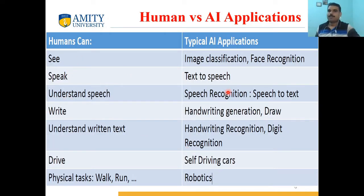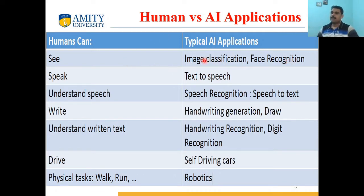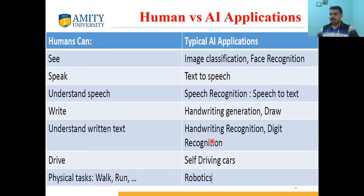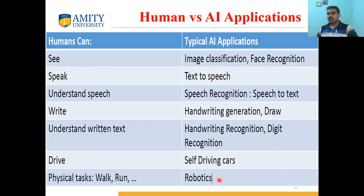These are various human abilities and their corresponding AI applications. For example, humans see through eyes; AI applications such as image classification and face recognition bring the ability of seeing into machines. Text-to-speech converters bring speaking ability, speech recognition brings understanding of speech, and handwriting generation or digit recognition systems replicate writing and reading. Self-driving applications bring driving ability into machines, and AI tries to make robots that can perform physical tasks.